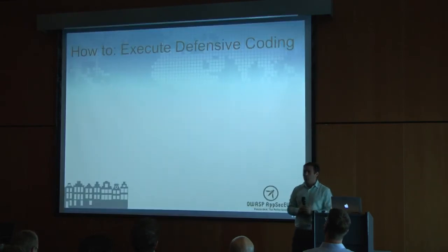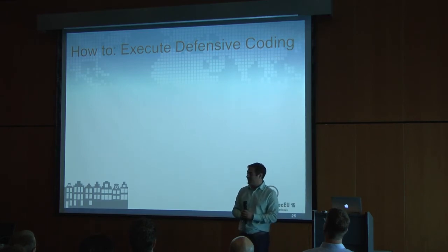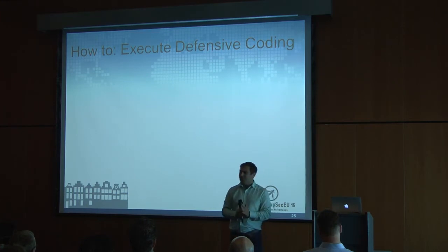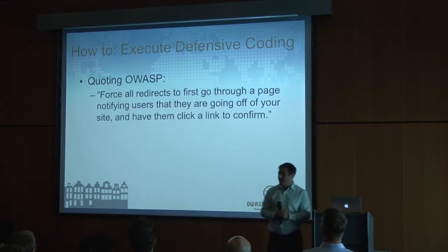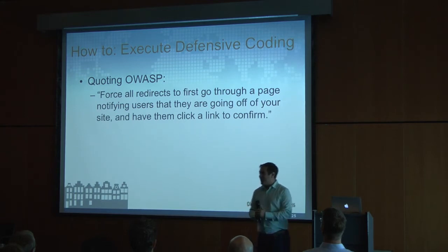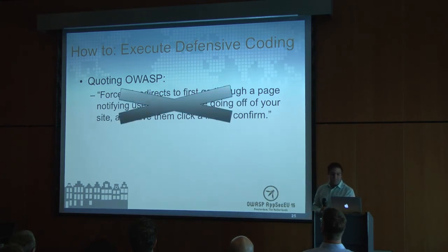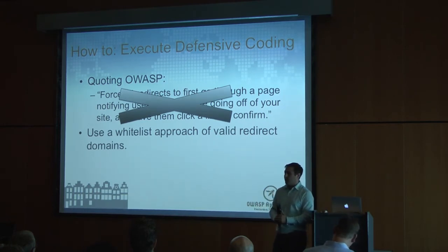Now that we know how to detect this, let's talk about defensive coding to prevent these vulnerabilities. The first step: do not allow open redirects. But if you must, follow the advice from OWASP. OWASP says to force redirects to first go through a page notifying users they're leaving your site, requiring them to click a link to confirm. Sadly, as we've proven, this technique is being used for SEO. So that's not the advice we would recommend. Instead, if you must have an open redirect, go for a whitelist approach — define which domains you want to approve, and don't approve anything not on the whitelist.